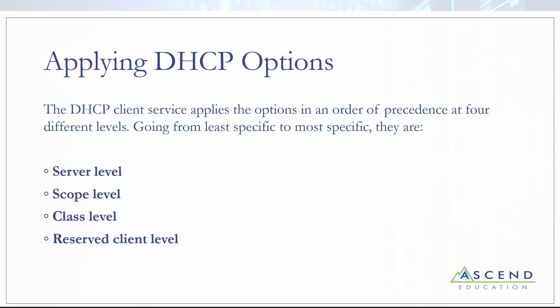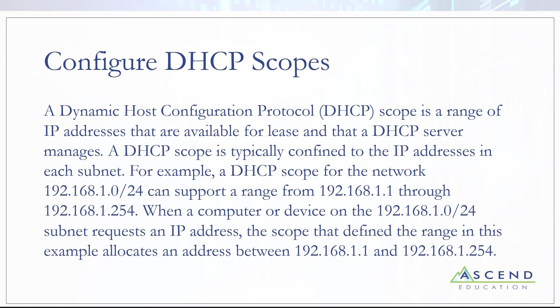You can apply DHCP options at several different levels. At the server level, you assign them once and all scopes inherit them. You can override the server level at the scope level — for example, giving a particular scope a different DNS server. There are also class-level and reserved-client-level options, though those are rarely used. Just be aware that those other options exist as well.